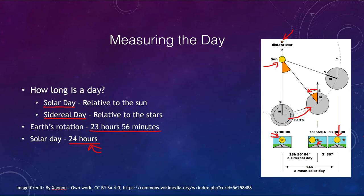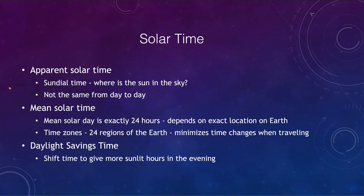Astronomers use the sidereal day — how long it takes the stars to return to position — but for ordinary civil time we use the solar day. There are even different types of solar days because the solar day is not uniform. We can have apparent solar time, which is what you would get from a sundial — where the sun is in the sky — and that changes from day to day. The apparent solar time can vary by easily half an hour over the course of the year.